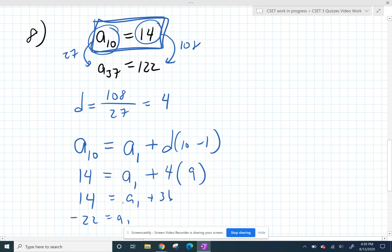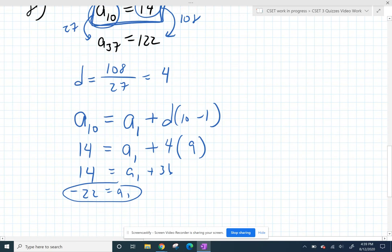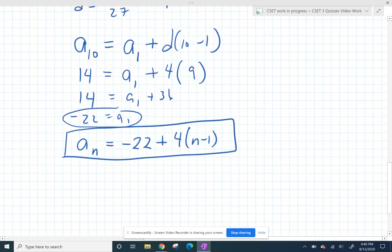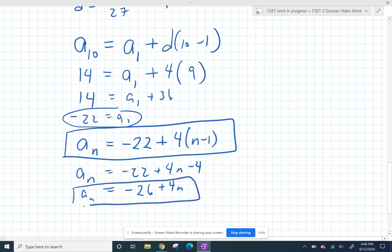Negative 22 is your first term. And so now your explicit formula is you can get any term you want by taking that first term, negative 22, and keep adding that common difference of 4, n minus 1 times. I kind of like it in that form, that point slope form, but the answer key does distribute that, and you get negative 26 plus 4n.